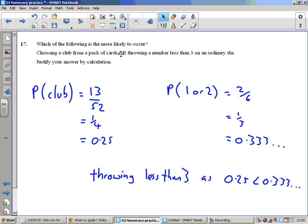Which of the following is more likely to occur: choosing a club from a pack of cards or throwing a number less than three on an ordinary die? Clubs are one of the suits. There are 13 clubs out of 52 playing cards, but we didn't actually need to write that down because we know there's four suits and one of the suits are clubs. We could have went straight to 1 over 4. Throwing a number less than three on an ordinary die, less than three you've got a 1 or a 2. There are six possible outcomes. That's 2 sixths or 1 third.